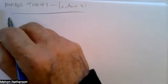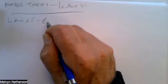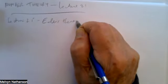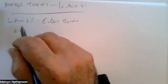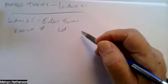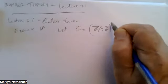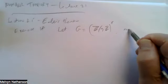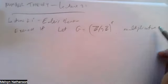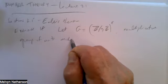This is number theory, lecture 21. I was asked to do exercise 18 in section 2.5, which is on Euler's theorem. Exercise 18 says: let G be the group Z mod 7Z star — the multiplicative group of units modulo 7.